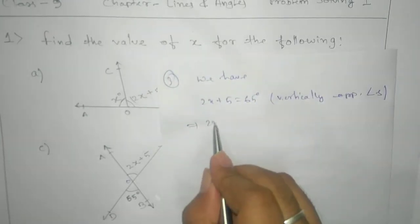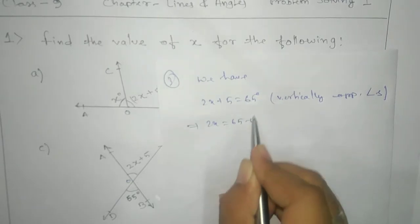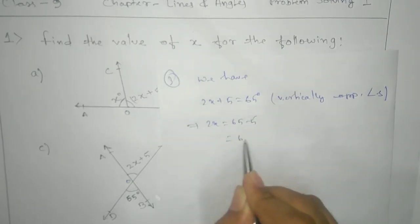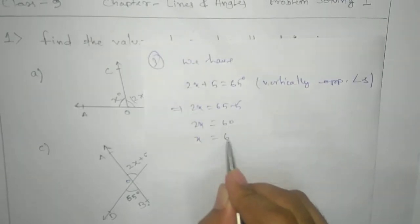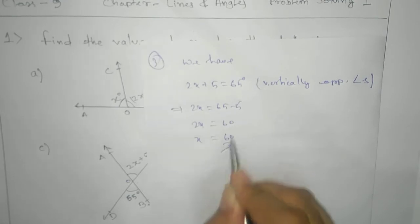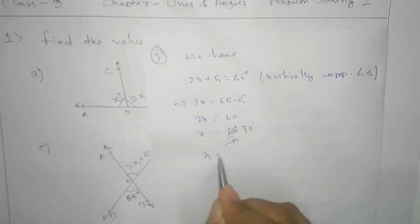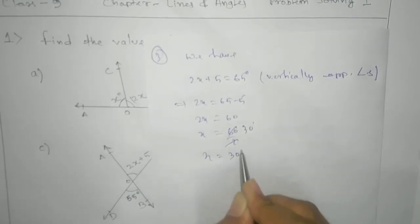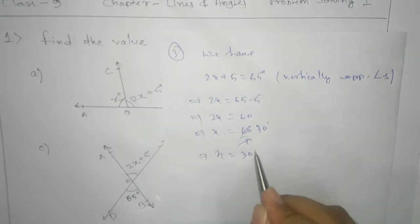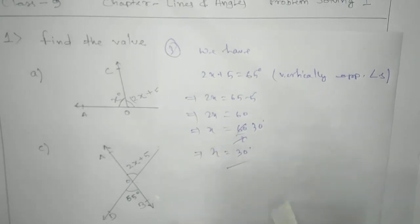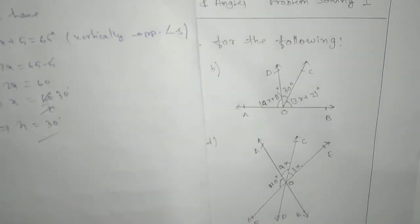Now solve it. 2X equals 65 minus 5, which gives 60. Therefore X equals 60 by 2, which is 30. X equals 30 degrees. This is your answer for the third one. Now proceed to the fourth one.